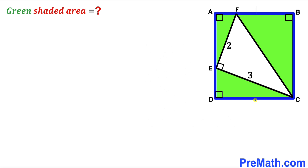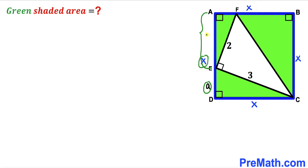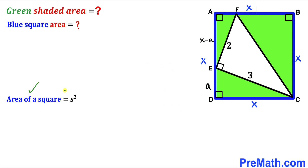Here's our next step: let's label the side lengths of the blue square. Let's assume this side length is x, so all four sides are x. Let's also assume this segment length is lowercase a, so the remaining segment length is x minus a. The area of the blue square using the formula area = s² gives us x². We'll call this equation 1.